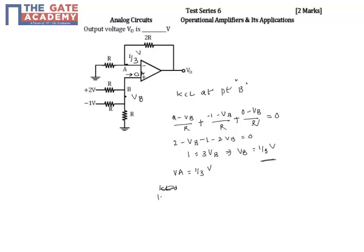Here also I will take this as entering and this is leaving. That means 0 minus 1 by 3 by R is equal to 1 by 3 minus V0 by 2R.